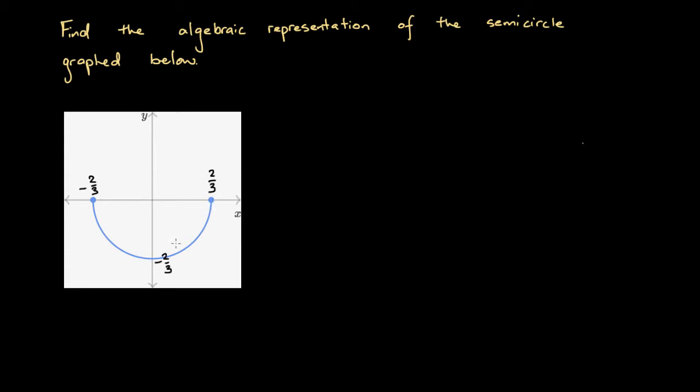So we know it's a bottom semicircle because it's the bottom half. All these points have either a zero or a negative y-coordinate associated with them, so it's the lower half of this semicircle.